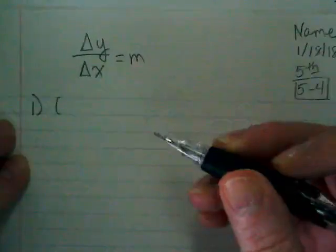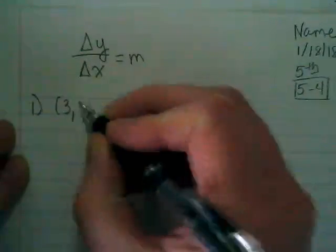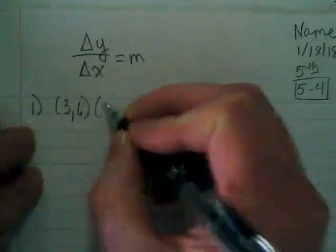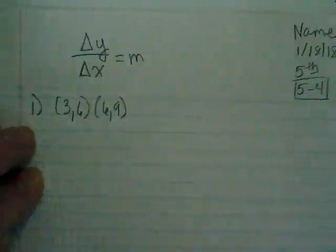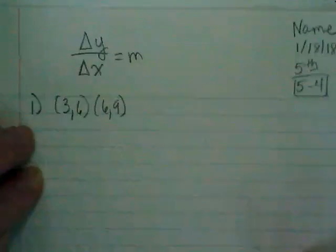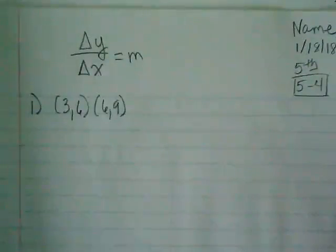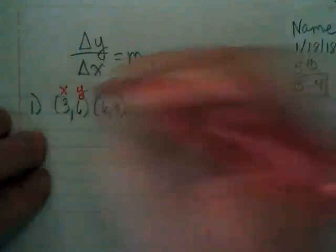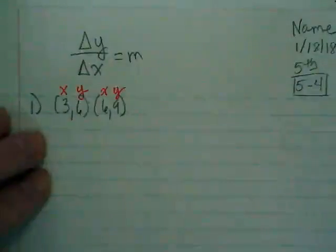I'd like you to write down the ordered pairs that are there. There's 3, 6 and 6, 9. Remember, every time we set these up, what's going to be on the top is the Y and what's on the bottom is the X. This is my X and this is my Y for the first pair. This is my X and this is my Y for the second pair.